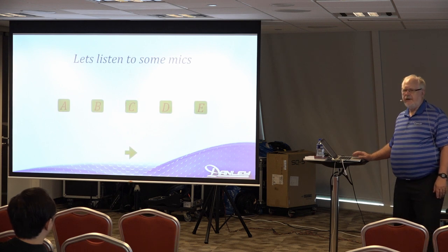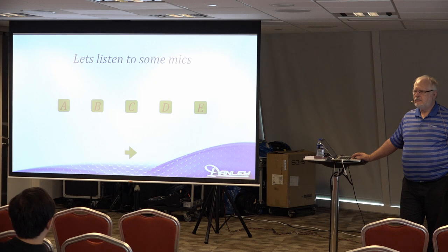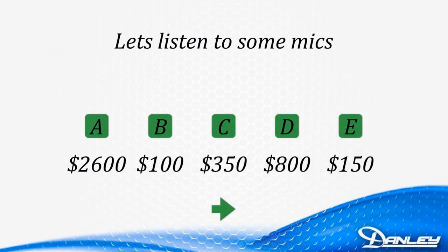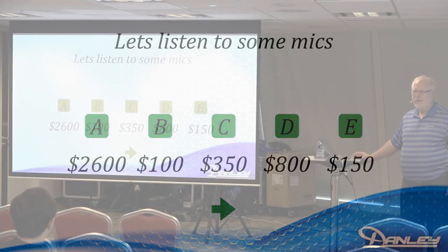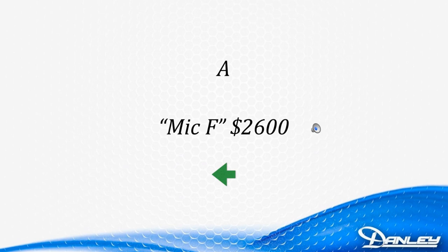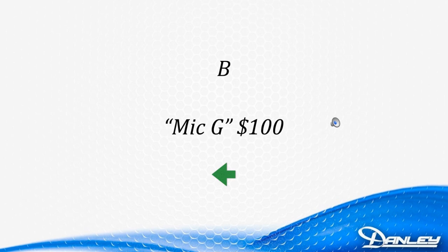Would anybody like to hear any of these over again? Could you hear differences between them? One thing that might be interesting to look at is how much these things cost. Did that surprise you? So let's listen again between the most expensive and the least expensive. This is microphone F: sounds to the sides, and especially to the rear of a mic, are largely rejected, or at least attenuated. Here's the cheapest — microphone G: it's important to note that even the most directional mics do not completely reject sound outside of the pickup pattern.